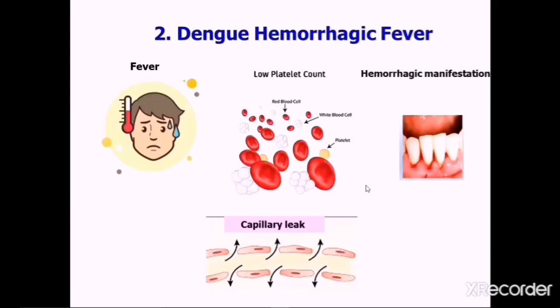For dengue hemorrhagic fever, there are three phases: febrile, critical, and convalescence. In contrast, dengue fever has only a febrile and convalescence phase. Clinical presentation in the early febrile phase of both forms is similar, so they cannot be differentiated early in the course of illness. With close monitoring of key indicators, dengue hemorrhagic fever can be detected at defervescence so that early and appropriate therapy can be initiated.